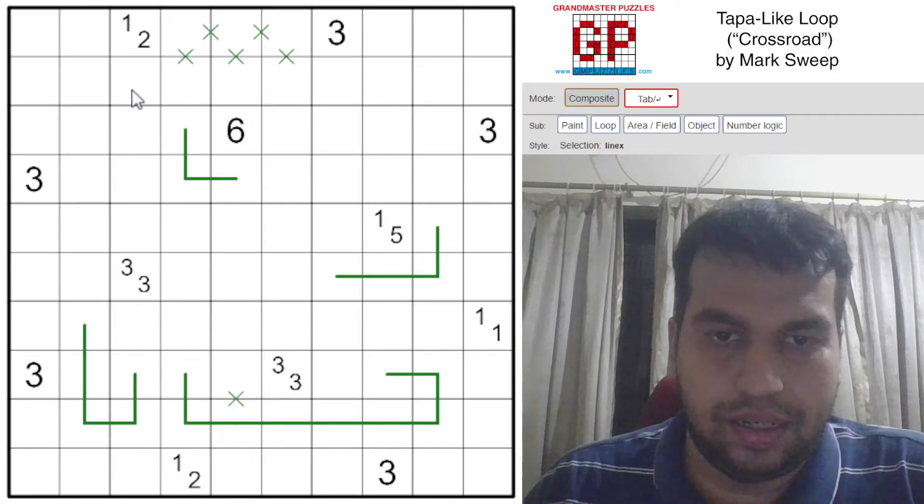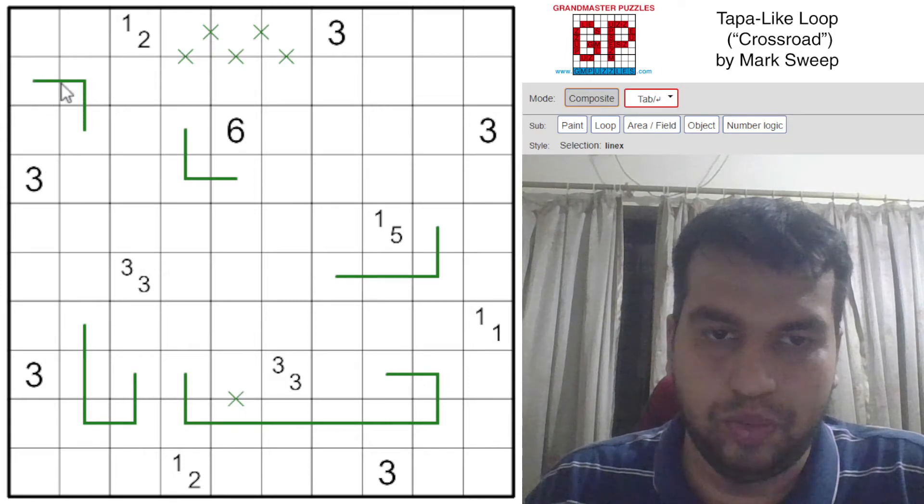That means this 1-2 clue, if the 1 part of it was here, it would cause a loop here or isolation here. So the 1 part is actually here.